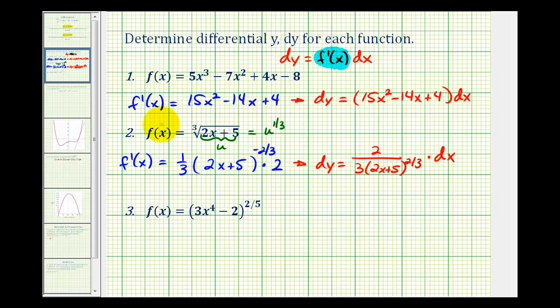And this last example is fairly similar to number two. We have a composite function. So this will be u. So we can think of this as u to the two-fifths. So we'll start by determining f'(x). That'll be 2/5 times u to the (2/5 - 1). That's negative three-fifths. And u is 3x⁴ - 2 times u prime, which would be 12x³.